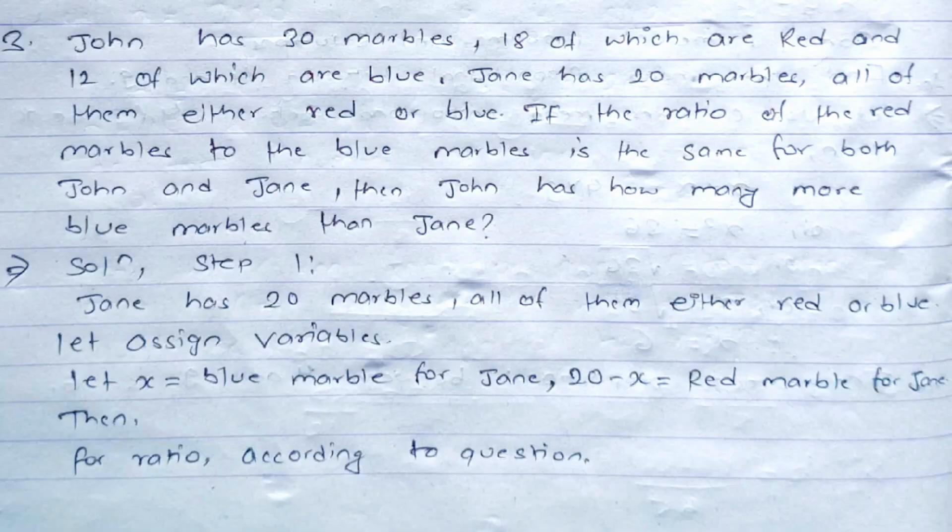The third question: John has 30 marbles, 18 of which are red and 12 are blue. Jane has 20 marbles, all either red or blue. If the ratio of red marbles to blue marbles is the same for both John and Jane, how many more blue marbles does John have than Jane? First, let x be the number of blue marbles for Jane, so 20 minus x will be the red marbles for Jane.